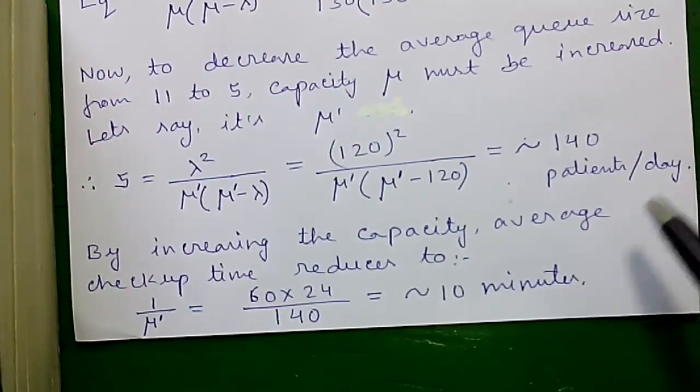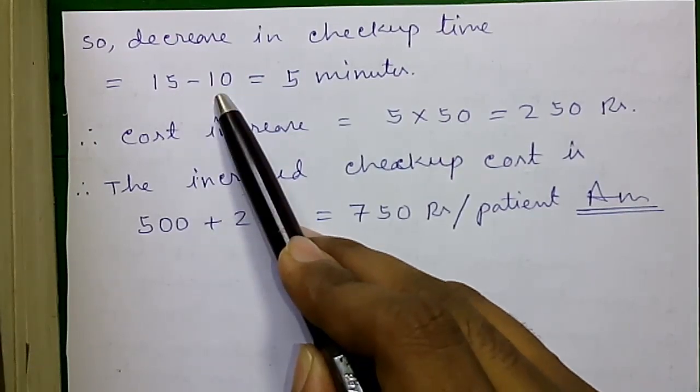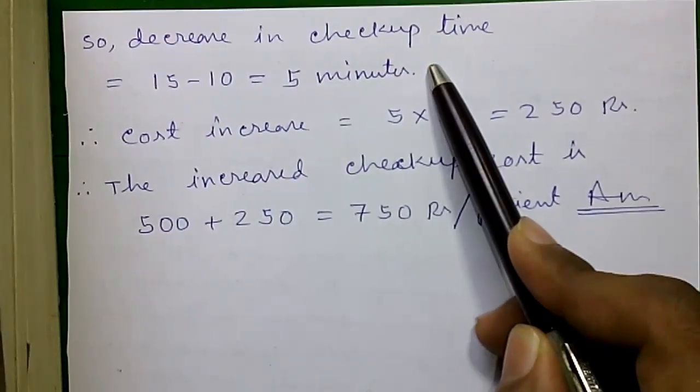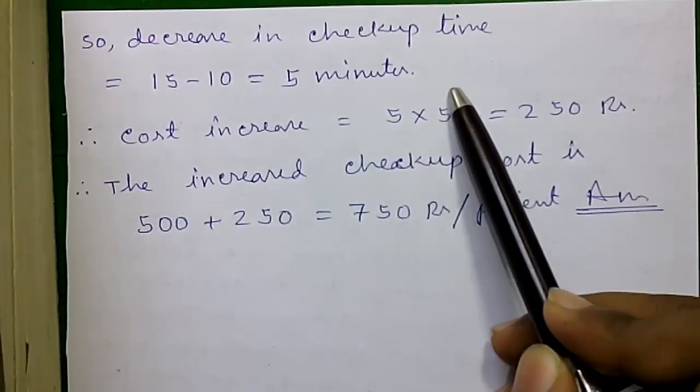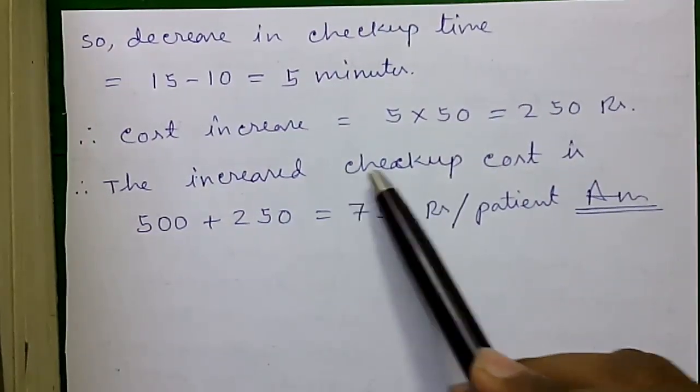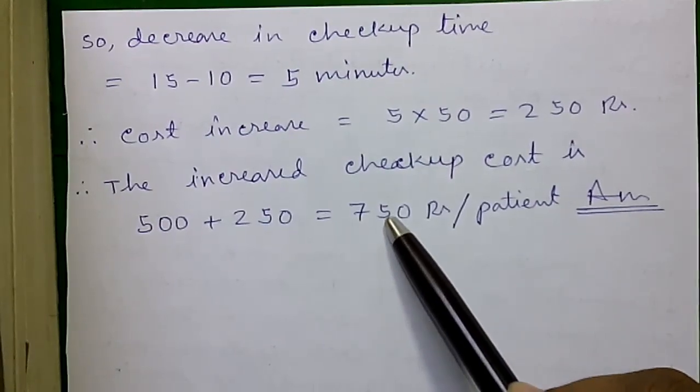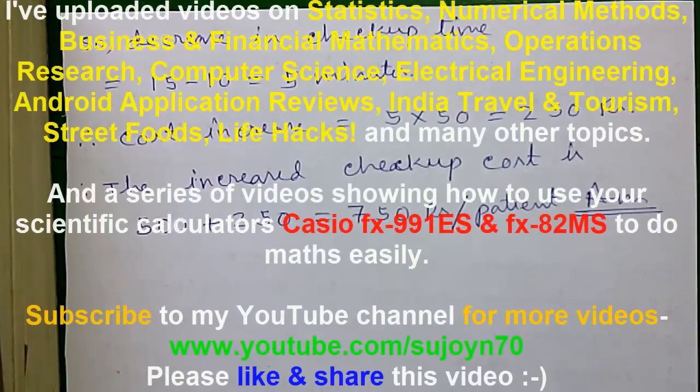So the decrease in checkup time equals to, previously it was 15 now it's 10, so 15 minus 10 equals to 5 minutes. So the cost increases by 50 into 5, that's equals to 250 rupees. So the increased checkup cost is 500 plus 250 equals to 750 rupees per patient.